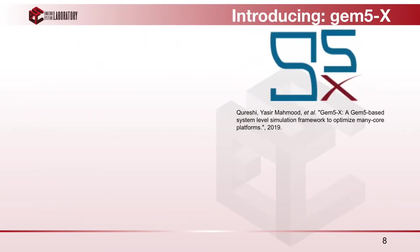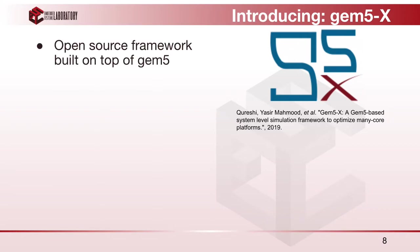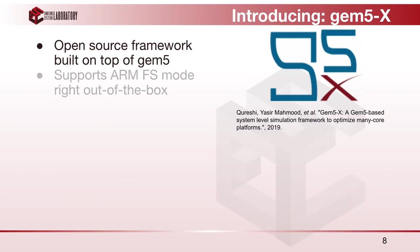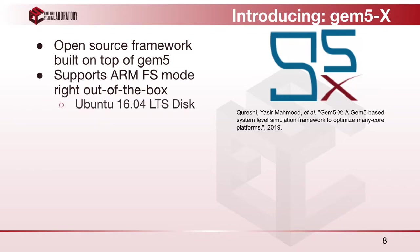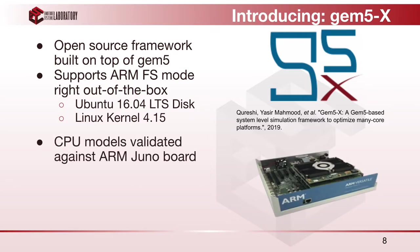GEM5X is an open-source framework built on top of GEM5 to simulate heterogeneous architectures, as well as a methodology to optimize said architectures. GEM5X supports ARM Full System Mode simulations right out of the box with an Ubuntu 16 disk image and a pre-compiled Linux 4.15 kernel. The in-order (Minor) and out-of-order CPU models have been tuned and validated against the ARM Juno board, so they generate performance statistics representative of real ARM hardware.